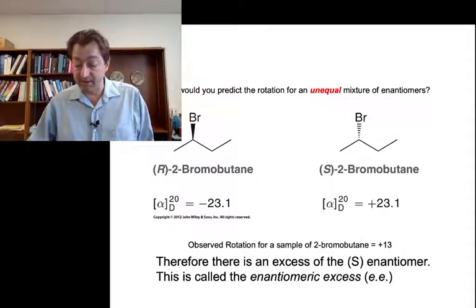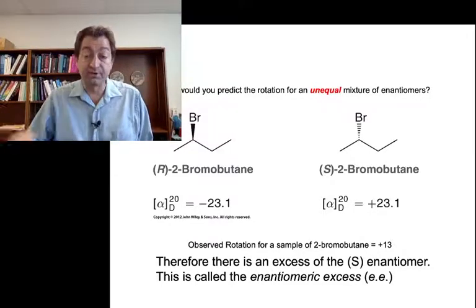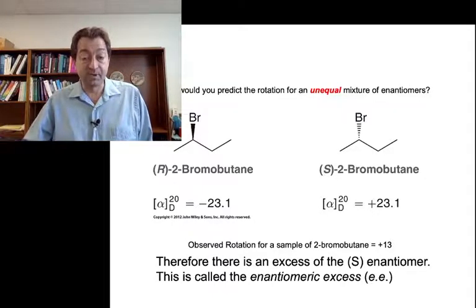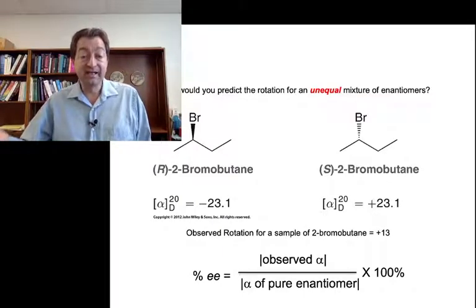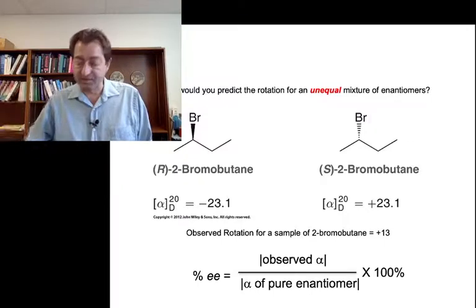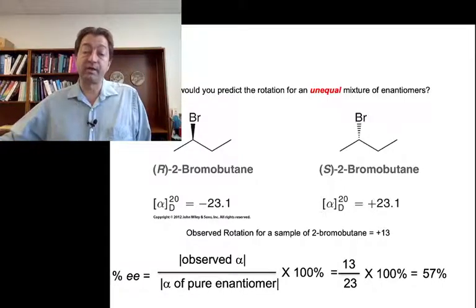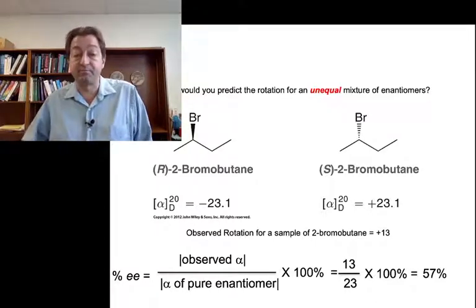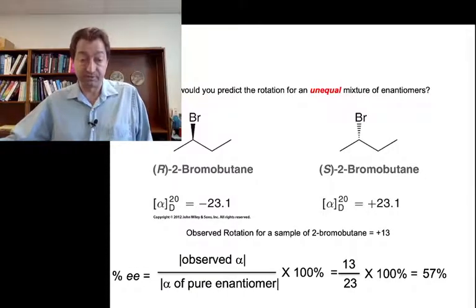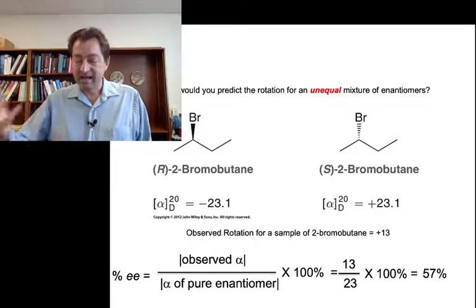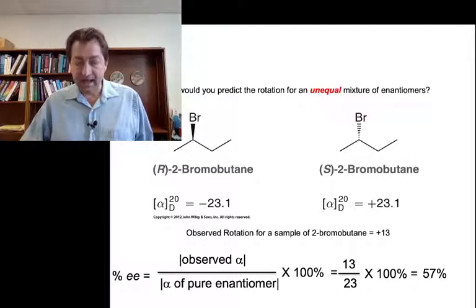We can make use of this information if we know the rotation of the pure enantiomer. We know S-2-bromobutane rotates plane polarized light plus 23. If we know the observed rotation, we can calculate the percent enantiomeric excess, or percent EE — an indication of what percentage of that excess enantiomer is present. In this case, taking the observed rotation of plus 13 over the full rotation of plus 23, times 100, gives a 57% enantiomeric excess of the S-enantiomer. We take the absolute values of the observed rotation versus the rotation of the pure enantiomer. Percent EE is a very useful indication of the outcome of our reactions.